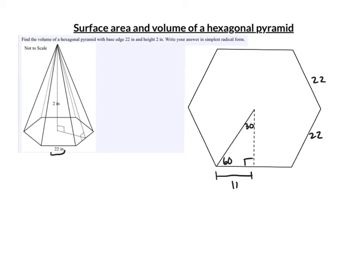And the apothem, this is t, and the apothem is t root 3, or in this case 11 root 3. And if we needed it, the hypotenuse would have been 2t.